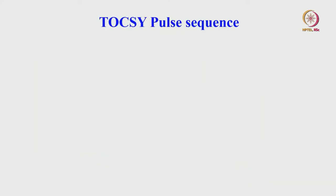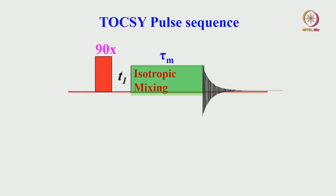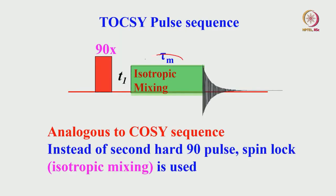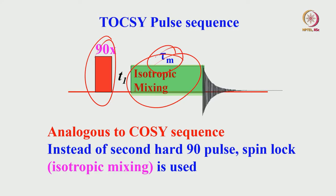What is the TOCSY pulse sequence? It does polarization transfer, and is similar to the COSY sequence. The only difference is that instead of the second hard pulse, we have what is called isotropic mixing. So we do not have two hard pulses as in COSY (90°–t1–90°–t2). Here it is: 90°–t1–isotropic mixing for a short duration. We apply a soft pulse for a long duration, called the mixing pulse. During this mixing pulse, something happens — that is what is called isotropic mixing. This is a very simple pulse sequence.